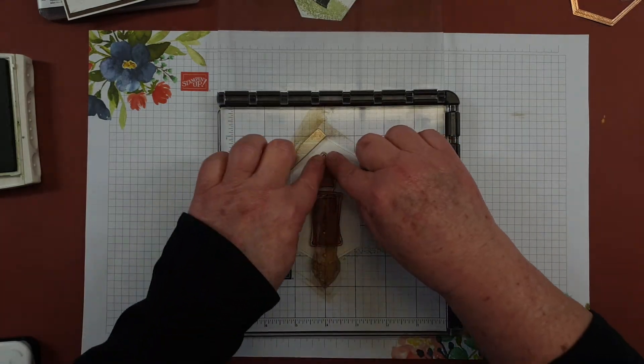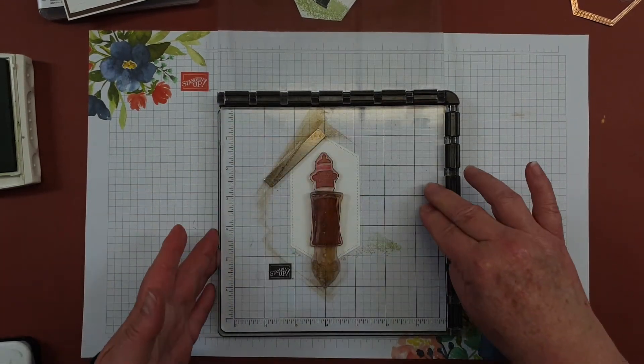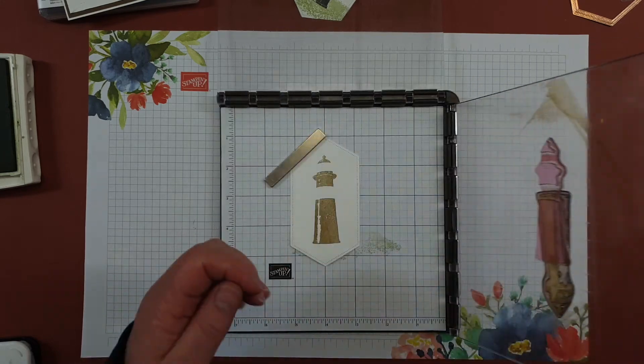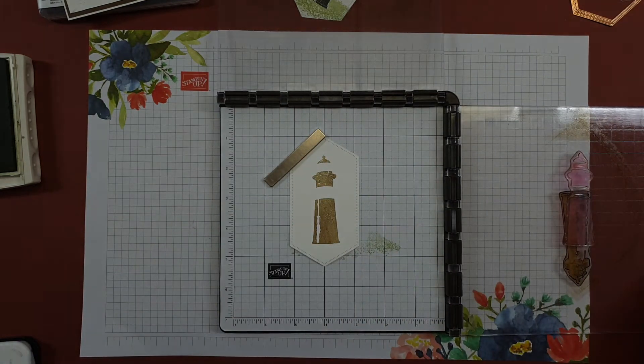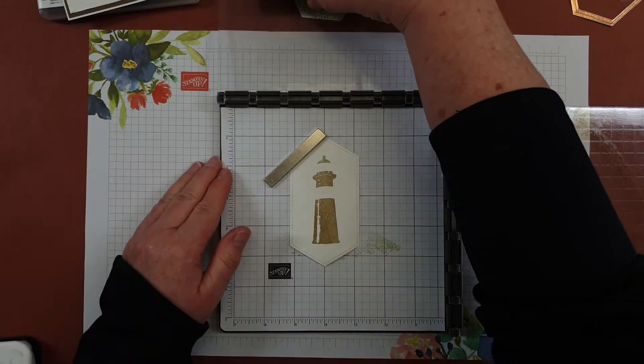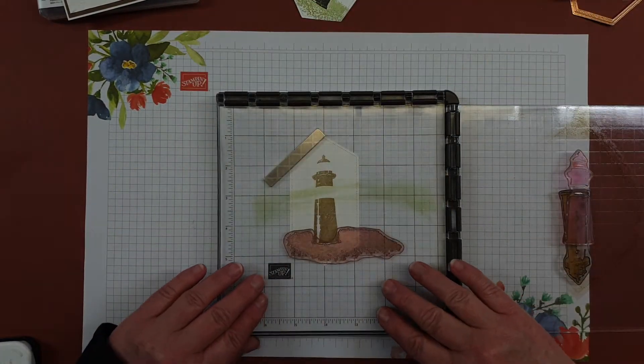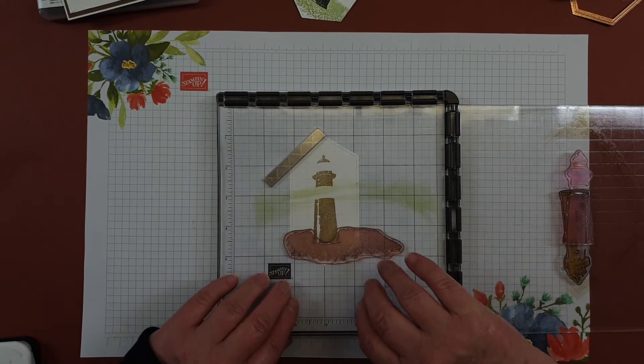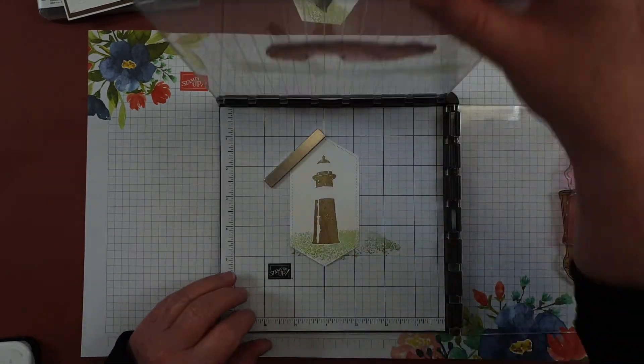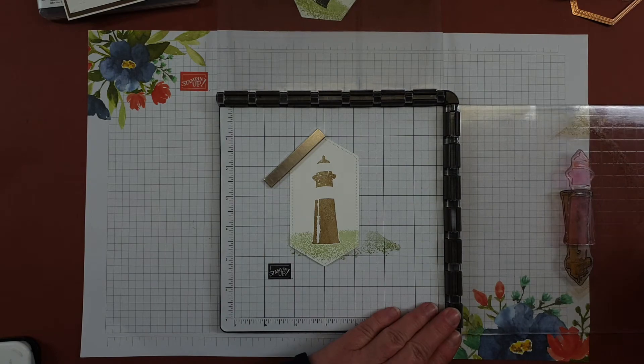One great thing about the Stamparatus is if you don't quite get an image that you want you can just push it back down again and we've got that. And then at the top we've got the grass which I'm going to ink with Pear Pizzazz.